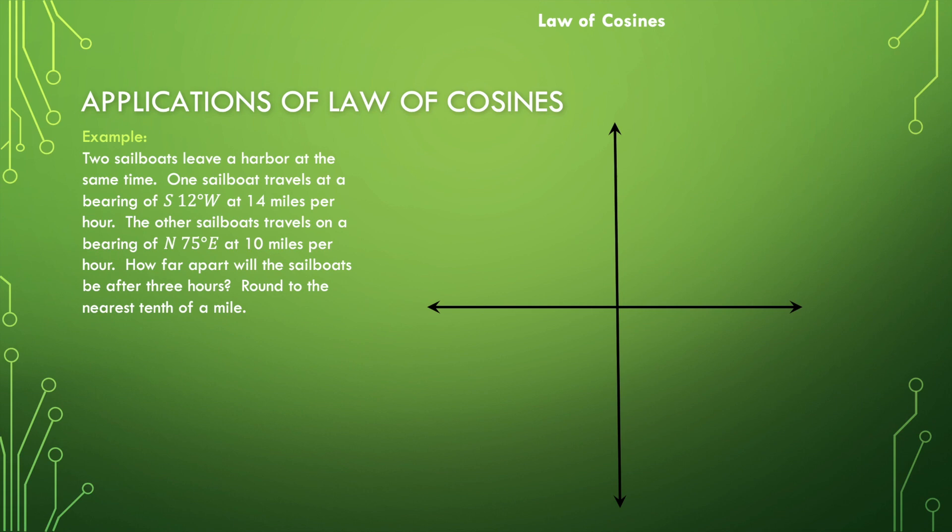We've got a couple of sailboats leaving the harbor at the same time, going in different directions. Let's wrap our head around what's actually happening. The harbor is represented at the origin. The first sailboat is leaving the harbor and traveling south 12 degrees west, so 12 degrees off of that south bearing to the west. Here's our sailboat.